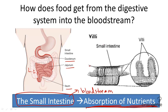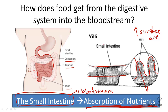Inside the small intestine is a very interesting set of structures called villi. Villi line the entire length of the small intestine, providing an increased surface area. This increased surface area is key to allowing the passage of as many nutrients as possible out of the small intestine and into the blood.